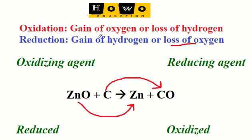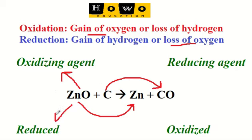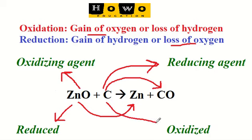So, this is the gain of oxygen, or we can say that this is the oxidation part of the reaction. Now, here in this reaction zinc oxide is acting as an oxidizing agent and is getting reduced. Whereas the reducing agent here in this reaction is carbon, and this carbon is getting oxidized forming carbon monoxide.